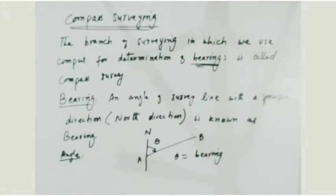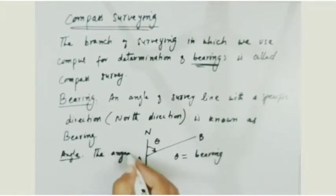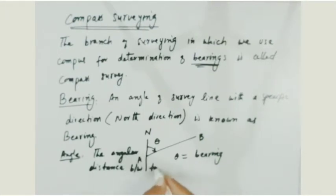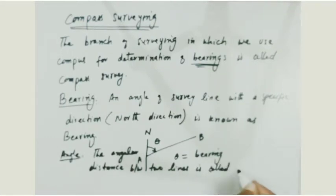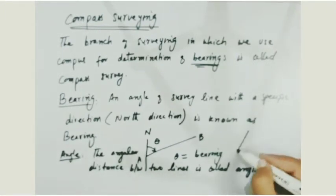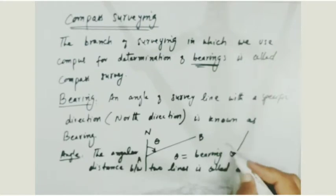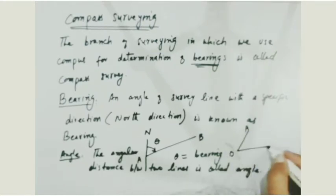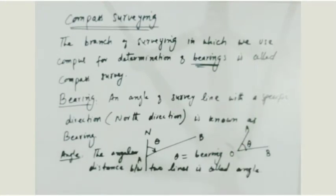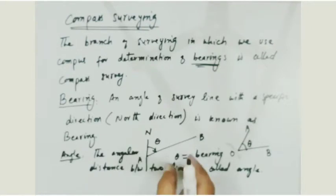The angular distance between two lines is called an angle. For example, we have two lines OA and OB — the angular distance between these two lines is called an angle. While the angle between a survey line and the North direction is called bearing.